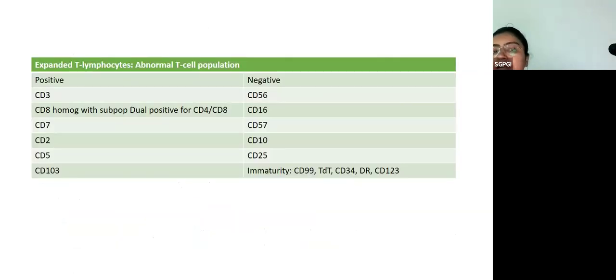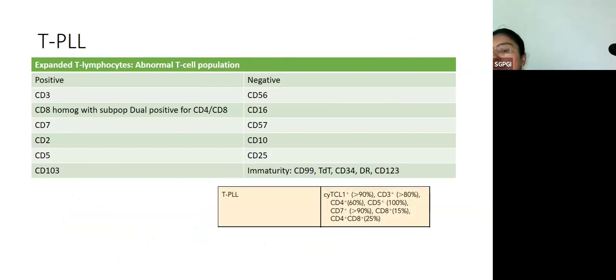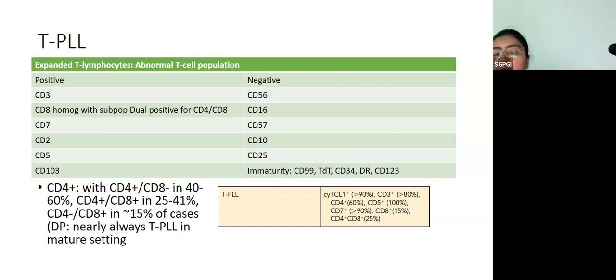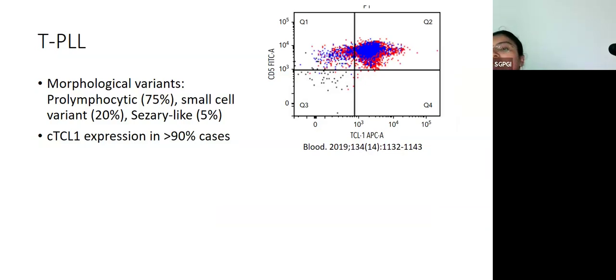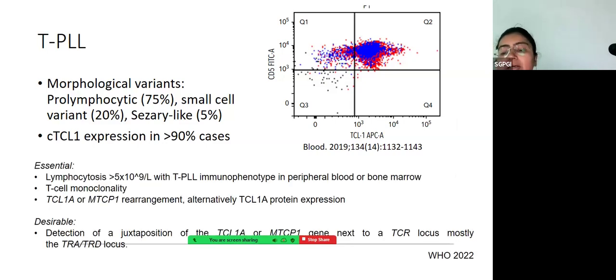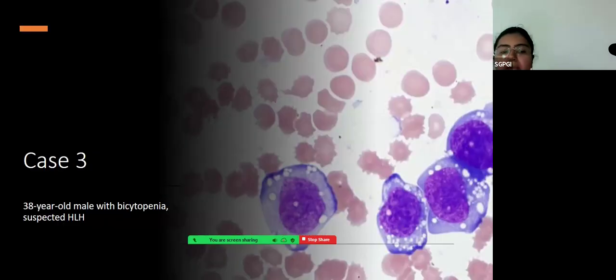These were the markers that were positive and negative. We rendered a diagnosis of T-PLL. This is the typical phenotype of T-PLL. If you have a look at it, CD4 is positive in the majority of the cases. CD8 and CD4 positivity is seen in about 25 to 41 percent. Only about 15 percent of cases are CD8 positive. Remember that dual positivity for CD4 and CD8 in a context of a mature T-cell lymphoma almost always is a T-PLL. T-PLL is also associated with a conventional karyotype. In this patient by FISH, there was deletion 11q. For T-PLL, the other thing that you can do if you have is the TCL1 staining, which is very specific for T-PLL. This has to be assessed by permeabilizing.